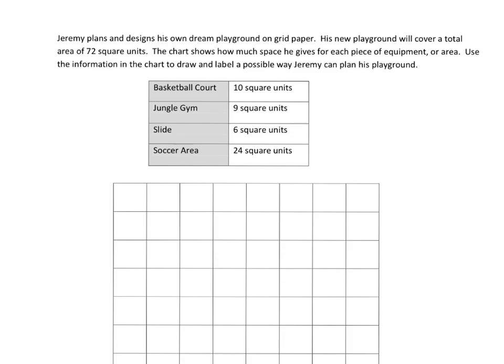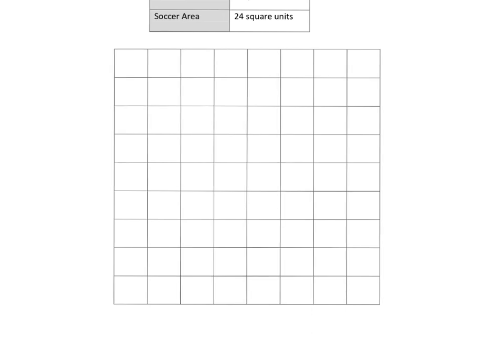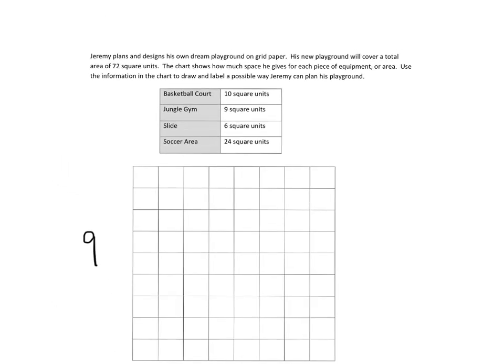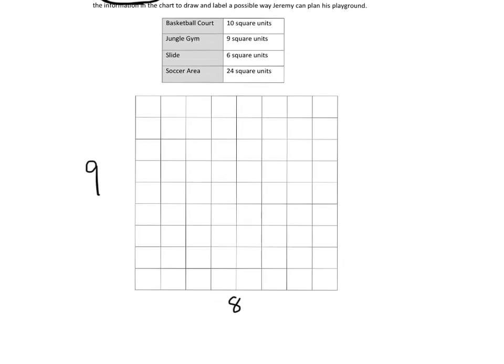So the idea is we have this big old huge grassy area right here. This whole area is his playground, and we can see that it's 1, 2, 3, 4, 5, 6, 7, 8, 9 units going this direction. And we can see that it is 1, 2, 3, 4, 5, 6, 7, 8 units going in this direction. 9 times 8 is 72. So that's where they get the fact that it is 72 square units.